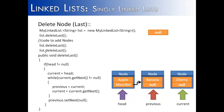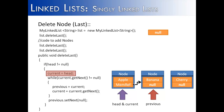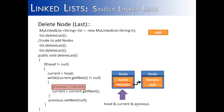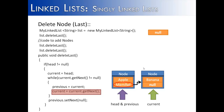Let's try this one more time. We call deleteLast on the list one more time. Is head null? No, it's equal to the first node. So current is now equal to head, and head and current both reference the first node. We check the loop: current.getNext is not equal to null — it is equal to the banana node reference. So previous moves up, and now head, current, and previous all point to the first node. Current then references the second node, banana, via current.getNext.